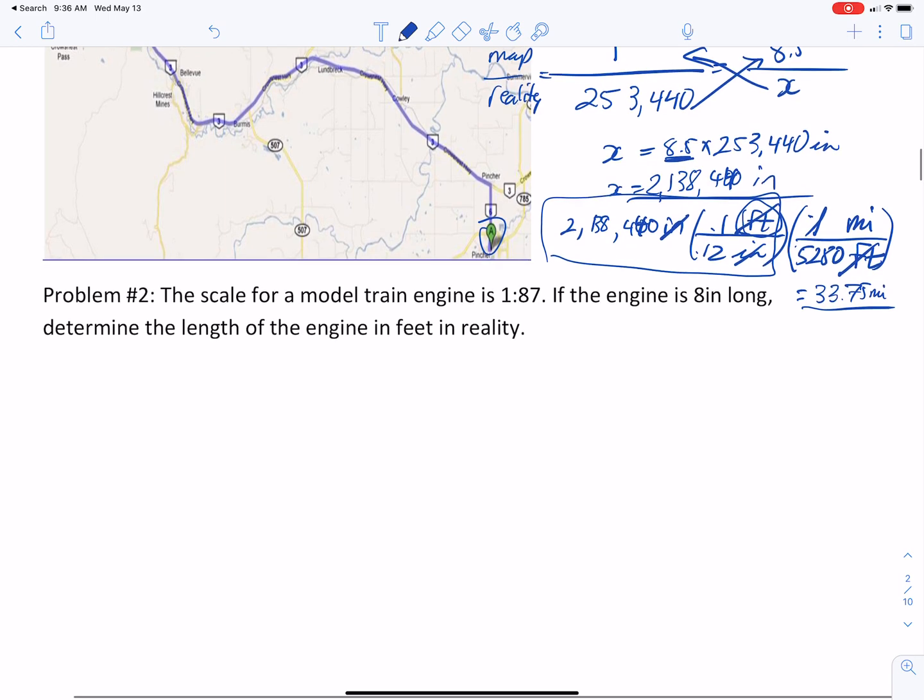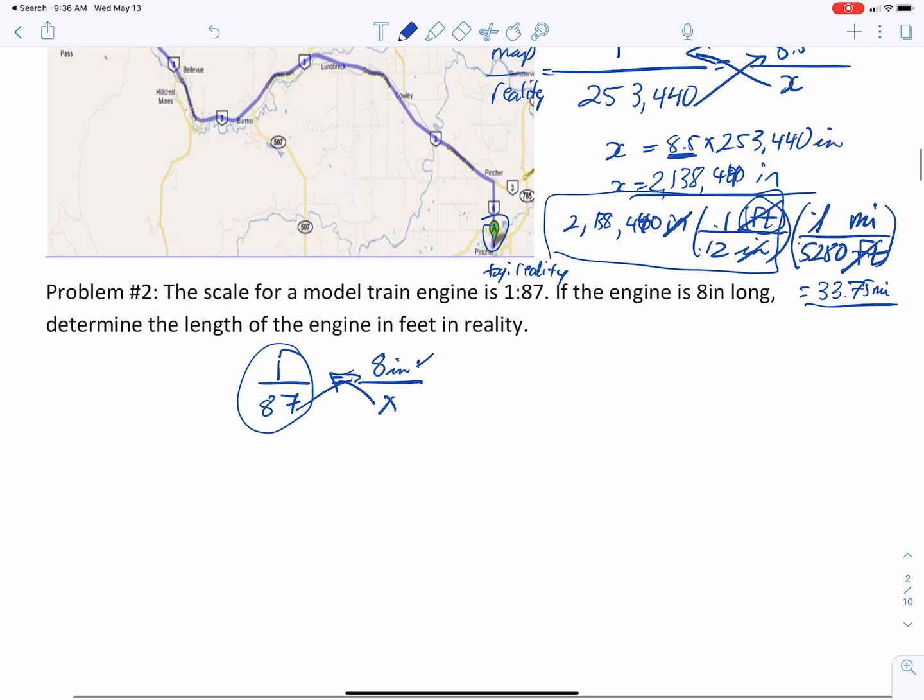Here's another one talking about a model train. So we have the scale. So in this case, it's like the toy size to the real size, the size in reality. So our scale is 1 to 87 is 8 inches to what is the length of this actual train engine. So again, I'm going to cross multiply. Notice the scale has no units. So whatever units I put in, in this case inches, is what I'm going to get out. So x is 8 inches times 87. So if I pop that into my calculator, I get 696 inches. But I want to know what it is in feet. So I'm going to take that and times it by 1 foot over 12 inches. And that gives me 58 feet.